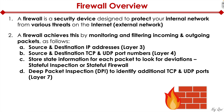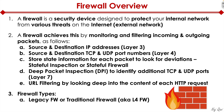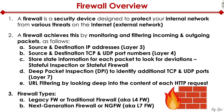The firewall can potentially do deep packet inspection to identify additional TCP and UDP ports at layer seven, and also identify the actual application itself. It can also do URL filtering by looking deep into the content of each HTTP request. There are two types of firewalls: one is called a legacy firewall or traditional firewall, also called a layer four firewall, and the other is the next generation firewall or NGFW, also known as an application layer firewall or layer seven firewall.